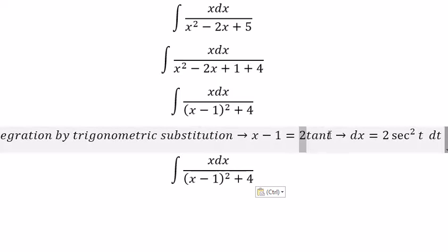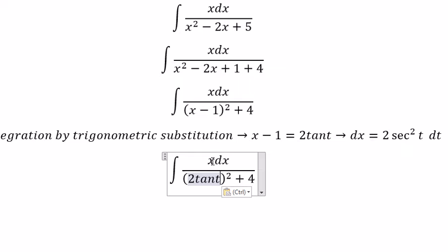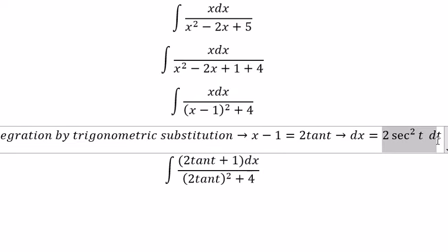So this one we can put in here. x, we change here. About x, we need to move negative 1 over here. So you got 2 tan t plus 1. The dx, we change for this one.